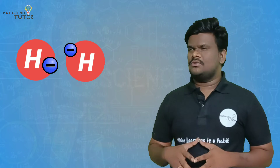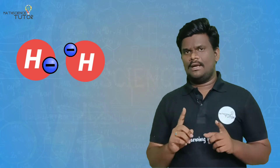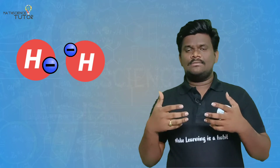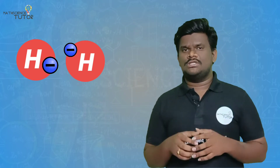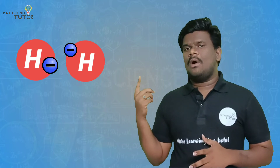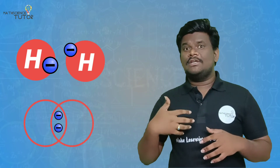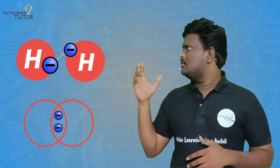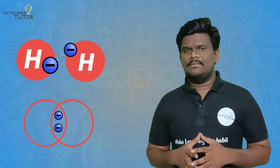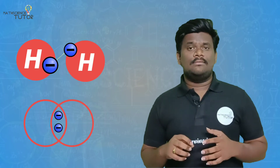Hydrogen atom has only one electron, which is in the first energy level. Two hydrogen atoms form H2 gas. Both hydrogen atoms have one electron each, and they are mutually shared, meaning they form a covalent bond. Combined, they get duplet stability. Only hydrogen, helium, lithium, beryllium, and boron follow duplet stability.